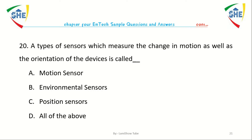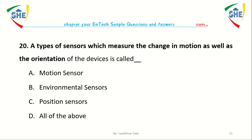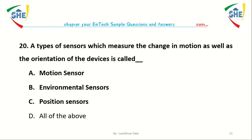Question number twenty: A type of sensor which measures a change in motion as well as the orientation of devices is called dash. A. Motion sensor, B. Environmental sensor, C. Position sensor, D. All of the above.